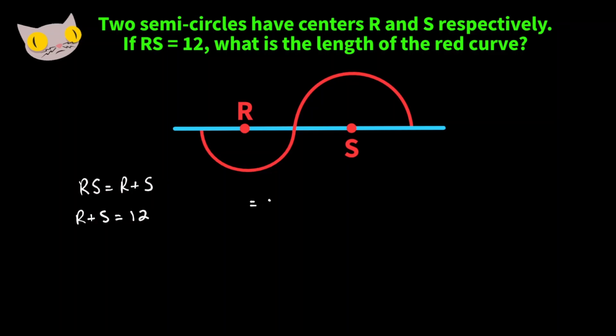That's going to give us pi times R plus pi times S. We can factor out the pi, and we're left with pi times R plus S.